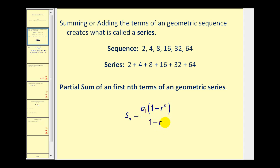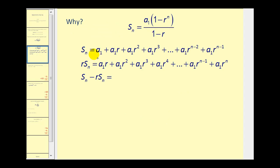Let's take a look at where this formula comes from. Starting with the geometric series a sub one plus a sub one times r plus a sub one times r squared, all the way out to a sub one times r to the power of n minus one. If we multiply both sides by r, each term picks up an extra factor of r, so the first term becomes a sub one times r and the last term becomes a sub one times r to the power of n.